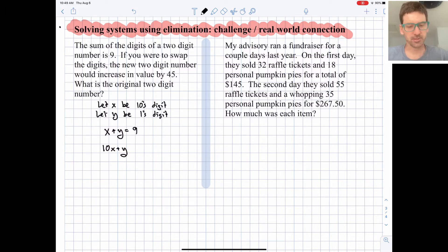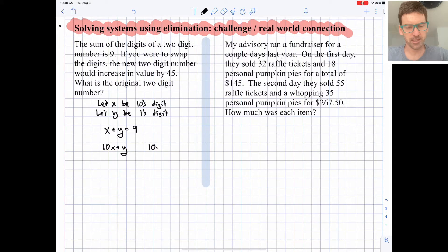So 10x plus y is, and we need to think about if we were to swap the digits, how does it compare to 10y plus x? So this represents the swapped digits. And one of them is 45 larger. The second one is 45 larger. So that means that this is plus 45. We have to add 45 to the first arrangement to get our new arrangement.